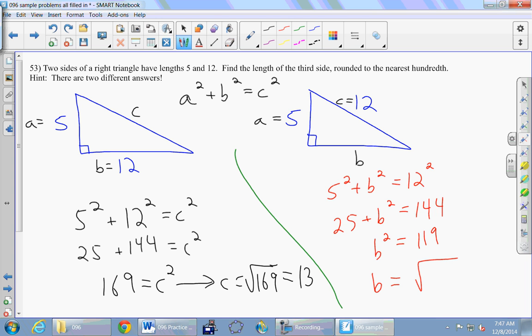Again, plus or minus, but we ignore the minus. And the square root of 119, you would simplify it if you could, but I don't think any perfect square goes into 119.